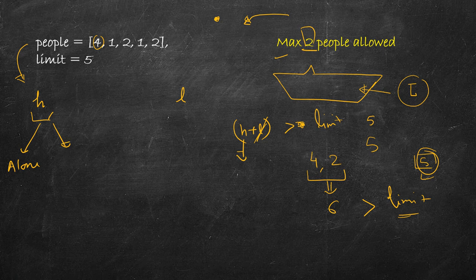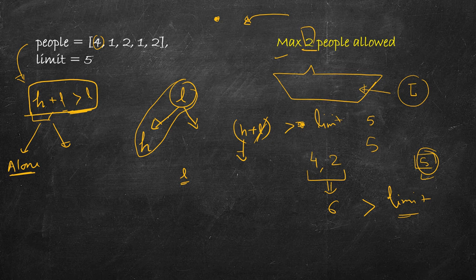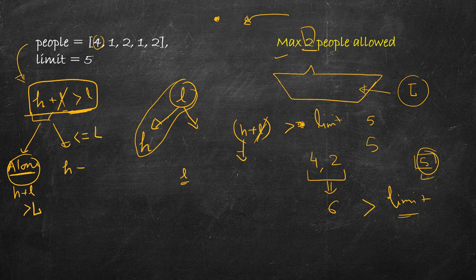For the heaviest person, one choice is to send them alone; the second choice is to pair them with someone. If you take the lightest person and can pair them with the heaviest one, you can pair them with anyone — so it's best to pair with the heaviest. If H plus L is more than the limit, then definitely the lightest cannot pair with the heaviest, and it won't pair with anyone else either, since all other weights are greater than or equal to L. So the heaviest person has to go alone.